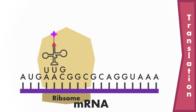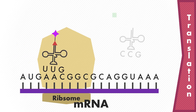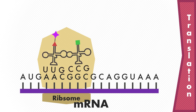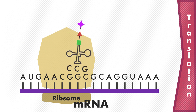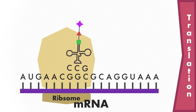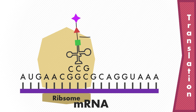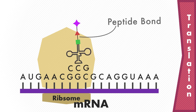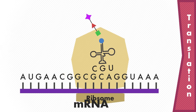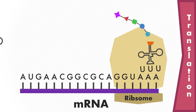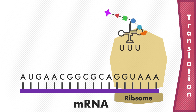The ribosome reads the next codon. The corresponding tRNA brings the activated amino acid to the ribosome. The second tRNA releases its load of amino acids to the third tRNA and leaves the site. Amino acids link up, forming peptide bonds using ATP. The process repeats itself until the entire message is read and all amino acids are brought in sequence, forming a polypeptide chain.